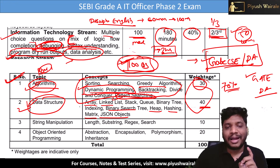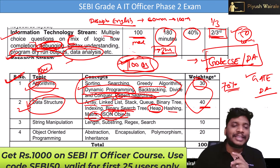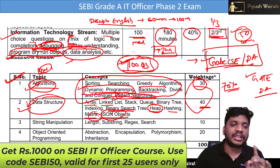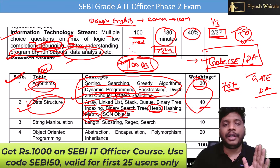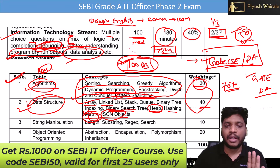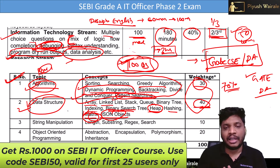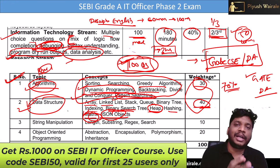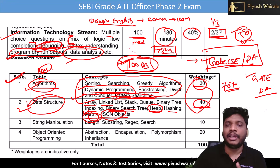For the data structure part — array, linked list, stack, queue, binary tree, indexing, binary search tree, heap, hashing, matrix, and JSON object. Except heap, matrix, and JSON object, everything is covered in my course. I am going to record videos for matrix, JSON object, and heap. We need to focus a lot more on algorithms and data structures with 40% weightage. I will add all remaining video content.